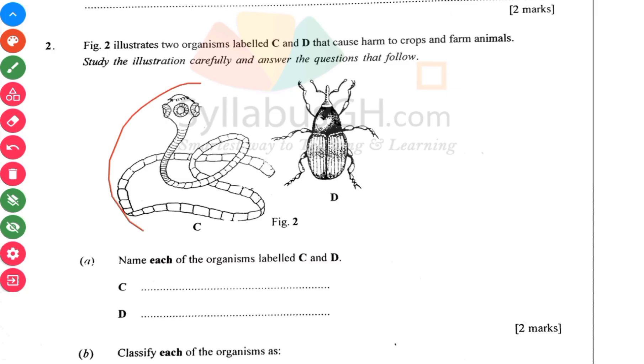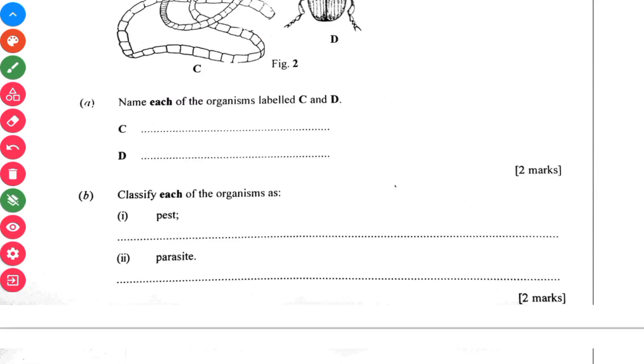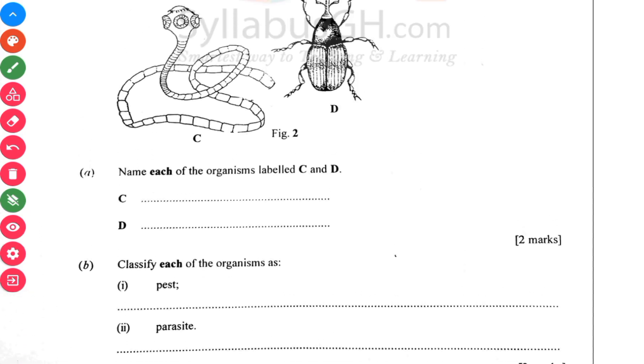You have these two organisms. The first one is the tapeworm, then the second one, the C is the tapeworm, then the D is the weevil, the grain weevil. Classify each of the organisms as a pest or parasite. This organism which is the C is a parasite. It stays in a host and destroys the host. But D is a pest which destroys your food or crops, for example maize or beans.